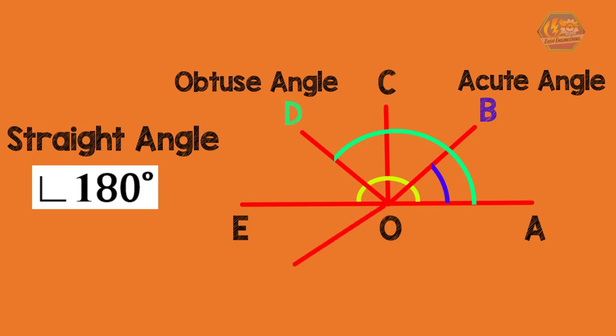And lastly, the angles which are more than 180 degrees but less than 360 degrees are called reflex angle. By the way, a complete or full rotation of a circle is 360 degrees. Please take a look at the picture shown.